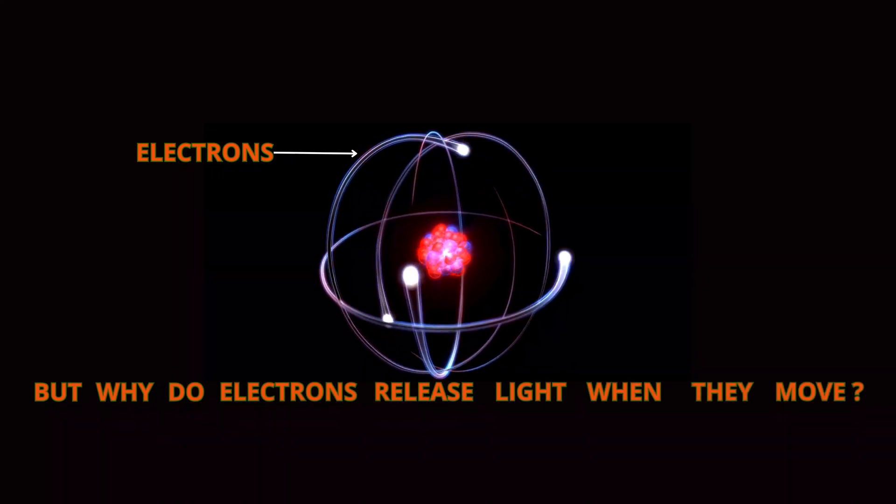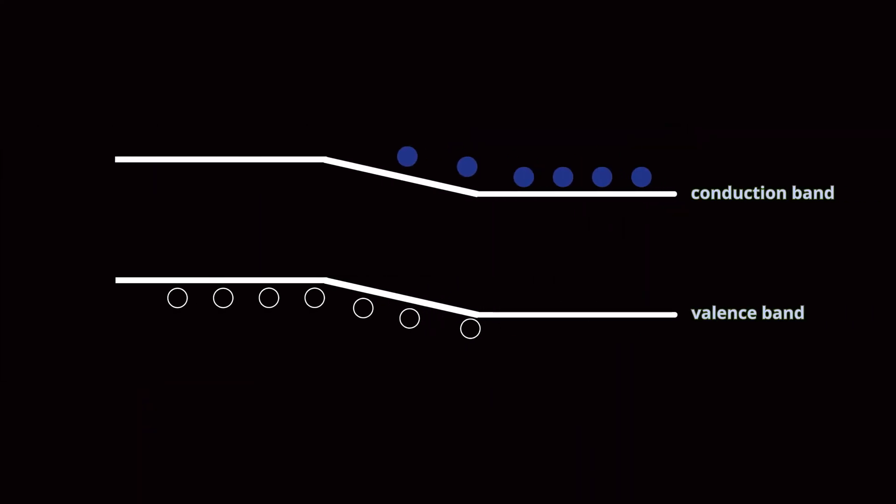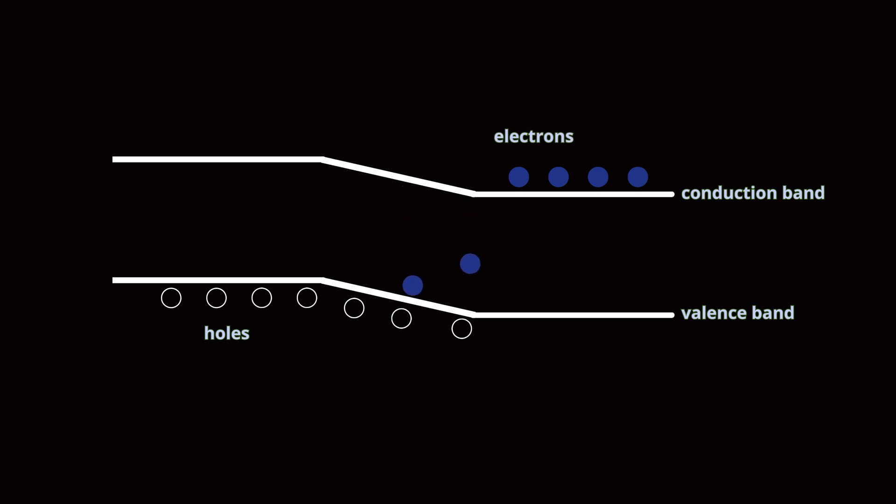But why do electrons release light when they move? It's because of the energy difference between the two layers. When an electron drops into a hole, it moves from a higher energy state to a lower one, and the energy release comes out as a photon of light.